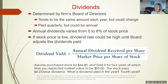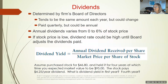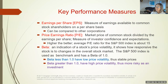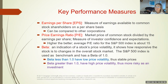Dividends: the board of directors declares them, usually paid quarterly. You can calculate your dividend yield by dividing what you receive by what the stock is trading for. Key performance measurements: earnings per share is just the net income of the company divided by the number of shares. It's not how much you're getting a check for — it's an indication of how well the company's earnings were.